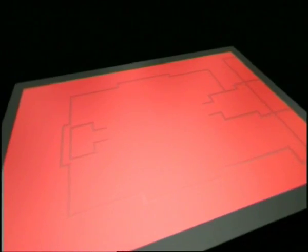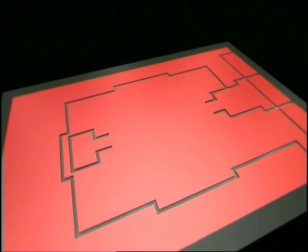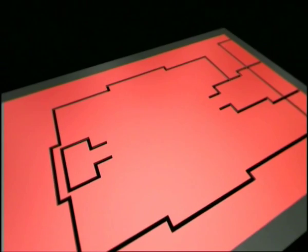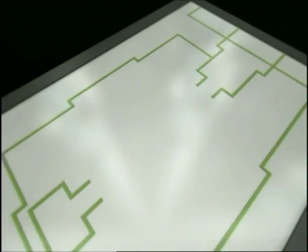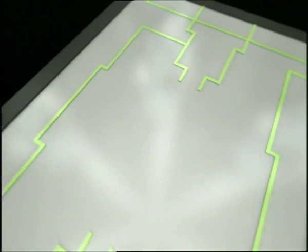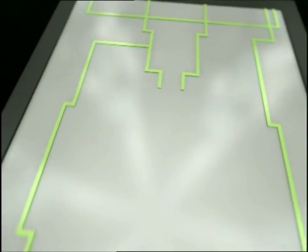First, a resist layer is applied. In this layer, with the help of a mask, the structures designed on the computer are exposed. After development of the resist layer, the structures are transferred onto the silicon chip with an etching process. This principle of adding and structuring layers is repeated several times in a predetermined order.